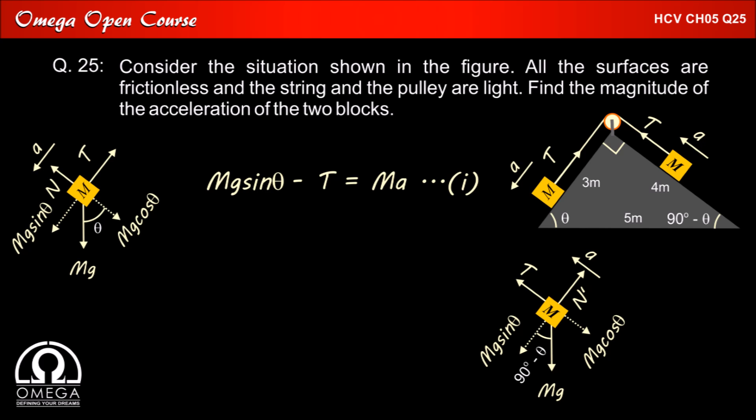Writing the equation of motion along the incline, we get T minus mg cos theta is equal to ma.